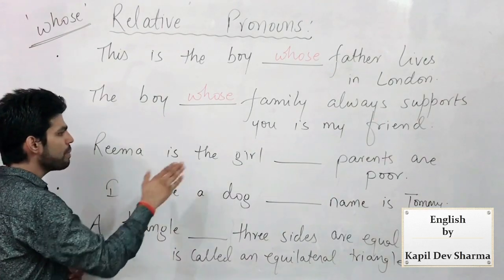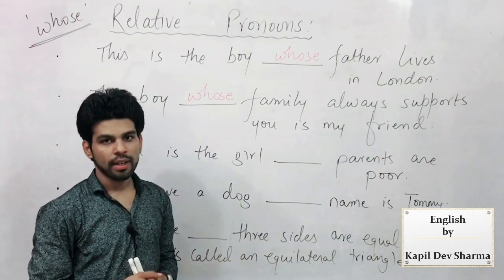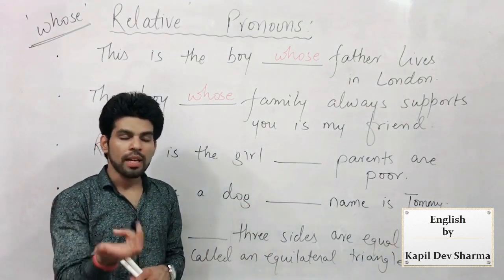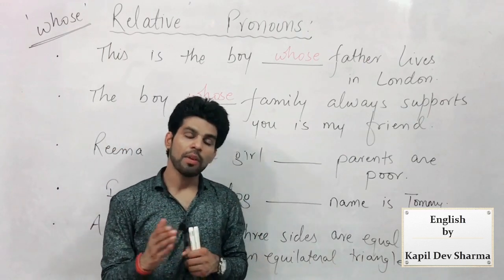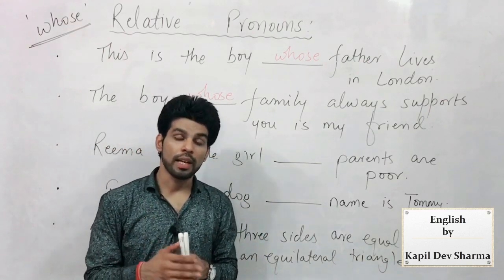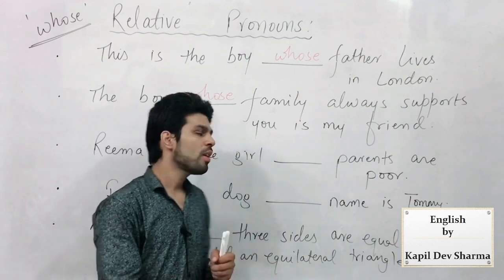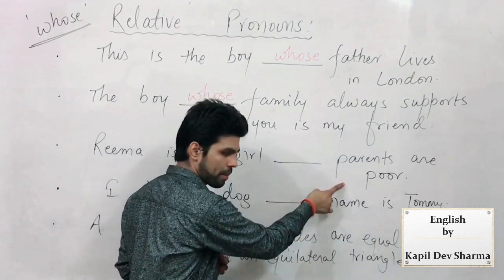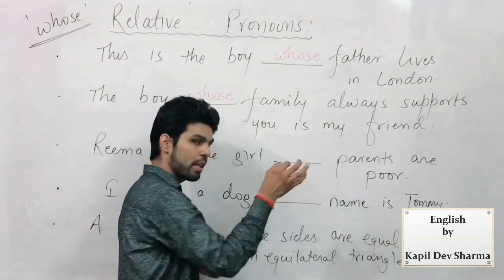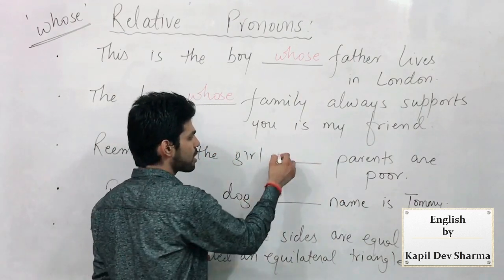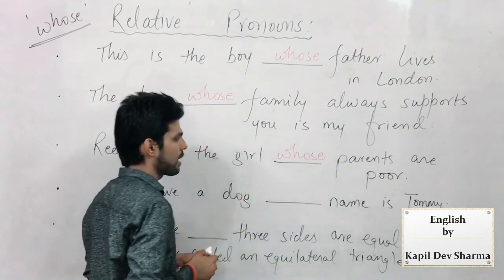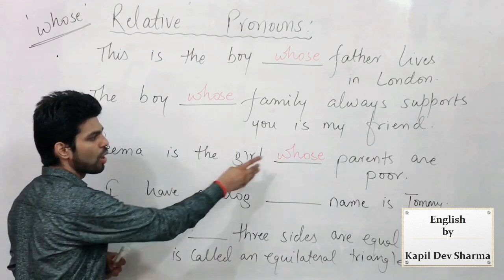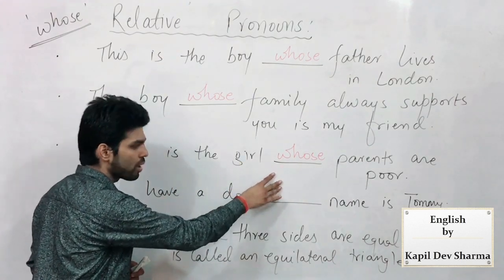Let's look again: 'Rima is the girl ___ parents are poor.' Rima voh ladki hai jiske maa-baap garib hain. 'Rima is the girl who parents are poor' — no. 'Rima is the girl jise maa-baap garib hai' — no. For Rima, I cannot use 'which'. All in all, her position is being discussed — her parents. That girl's parents — it's her right. And in possessive case there is only one pronoun used: 'whose.' So: 'She is the girl whose parents are poor.' I repeat — 'She is the girl whose parents are poor' — because that girl's parents are being talked about.